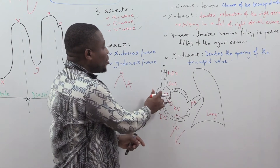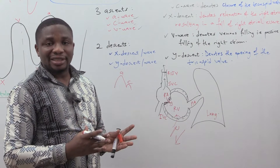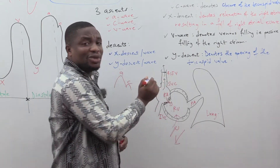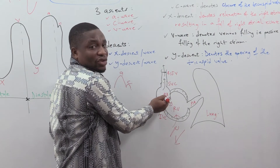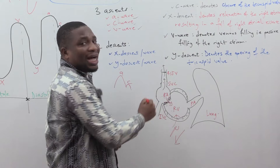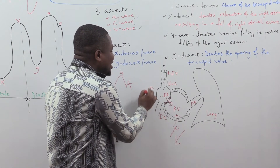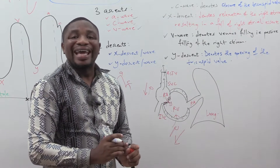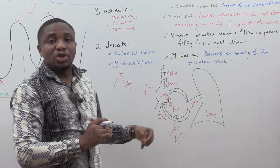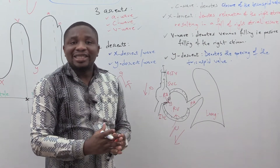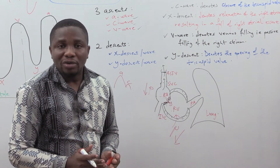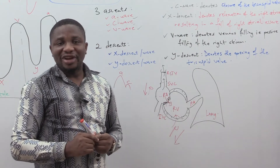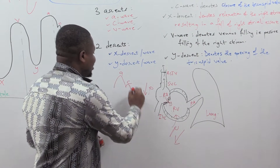Once the C wave occurs — denoting closure of the tricuspid valve — the right atrium goes into a state of relaxation. It relaxes to ensure that the pressure in the superior vena cava and right internal jugular vein becomes greater than that in the right atrium, allowing for passive filling of the right atrium. As the right atrium relaxes, the pressure within it falls. That relaxation causes a negative deflection we call the X descent, which is why the X descent denotes relaxation of the right atrium resulting in a fall in right atrial pressure.